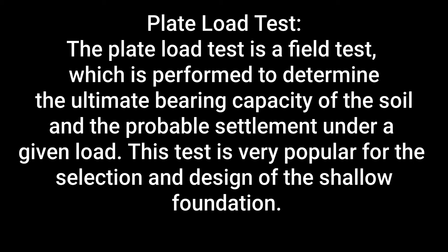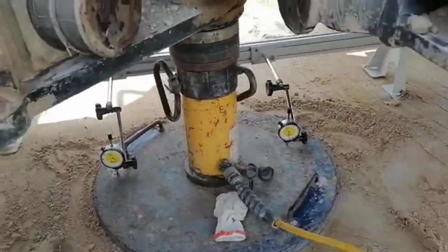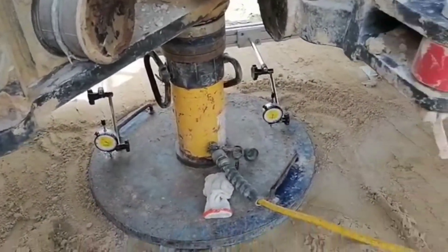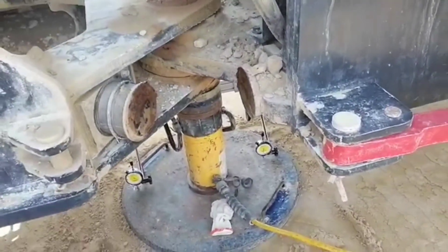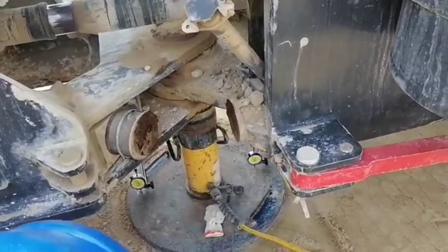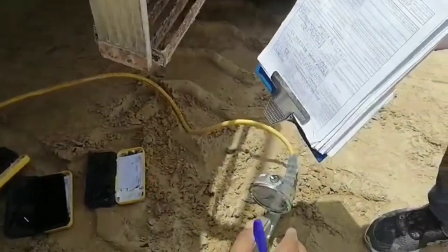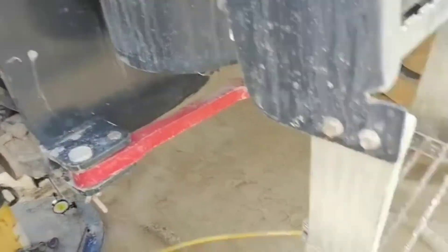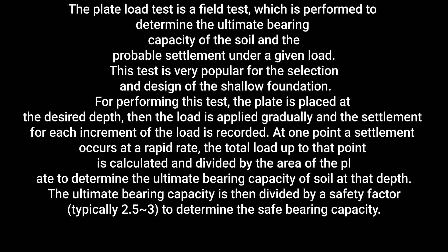For this we have to use one jack, there is a constant load, and there is a mild steel plate. Wherever we use it, we have to excavate to a minimum of five times the depth of the plate size. The thickness of the plate is 25 mm and the size of the plate varies from 300 mm to 700 mm.